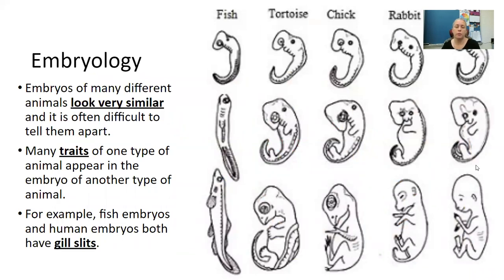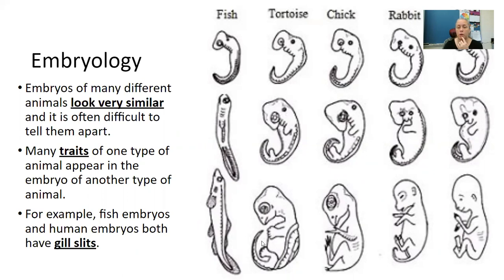We're going to talk about embryology. This is when embryos of many different animals look very similar and it's often difficult to tell them apart. Many traits of one type of animal appear in the embryo of another type of animal. For example, fish embryos and human embryos both have gill slits. As you're looking across these examples, you can see what they look like in the first stage of development, how they look as they start to develop, and what they look like when they're done developing. Especially the tortoise and chick — those structures are so similar. Embryology is another way that we compare species because these are things we can't see once they're full-grown.